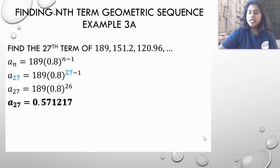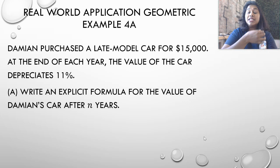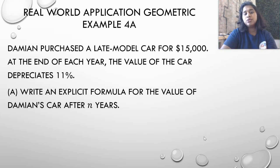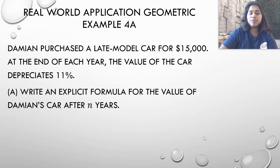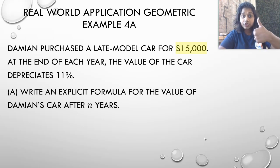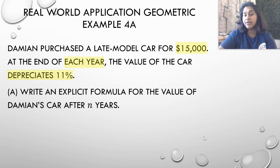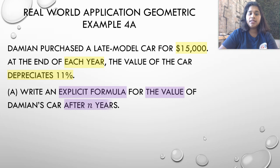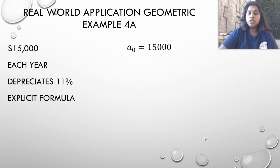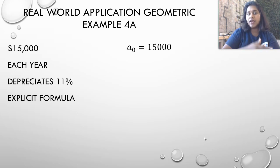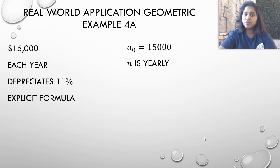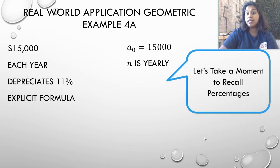Now for a real-world application: Damien purchased a car for $15,000 and at the end of every year the value depreciates by 11%. We need to write an explicit formula for the value after n years. The first term is $15,000, and n represents years — not months or days. Since there is an initial purchase value, a sub 0 equals $15,000, and depreciation begins at n equals 1.